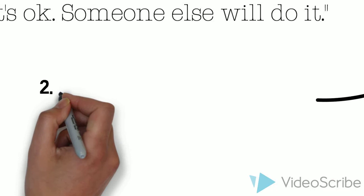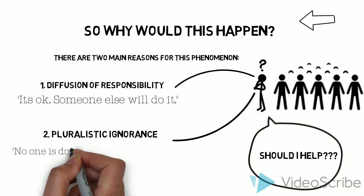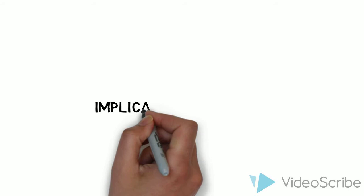Two, pluralistic ignorance. Individuals in a group tend to monitor the behavior of others around, and based on that they determine how to act. Pluralistic ignorance refers to the mentality that since everyone else is not reacting, my personal help is not needed. Seeing the inaction of others can lead to the thought that the emergency is not so serious.